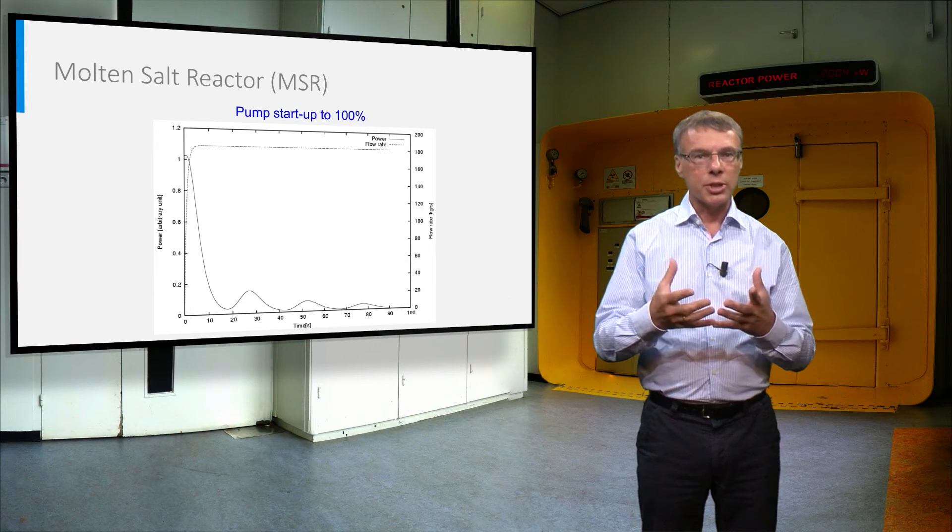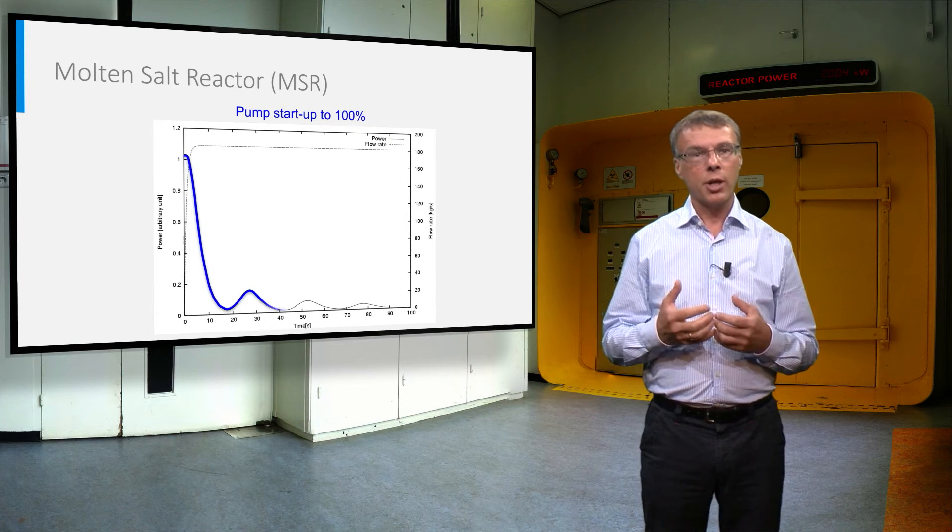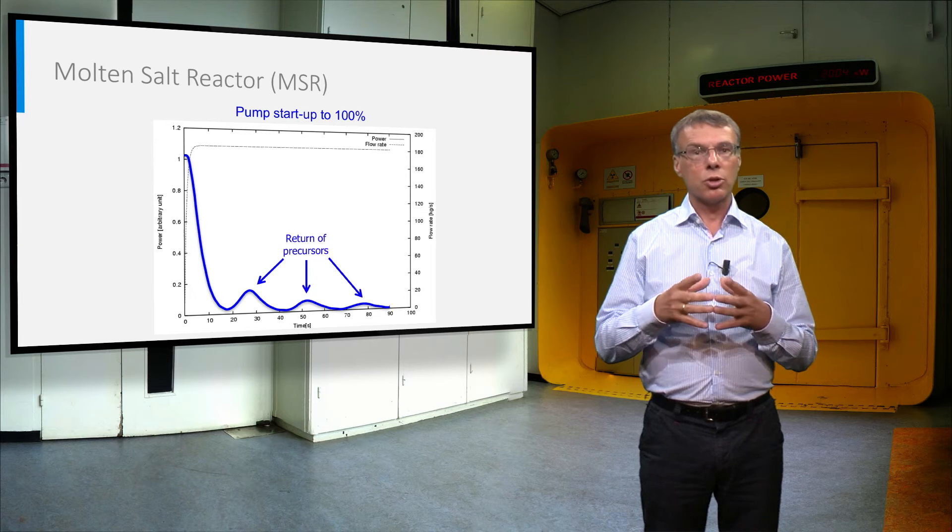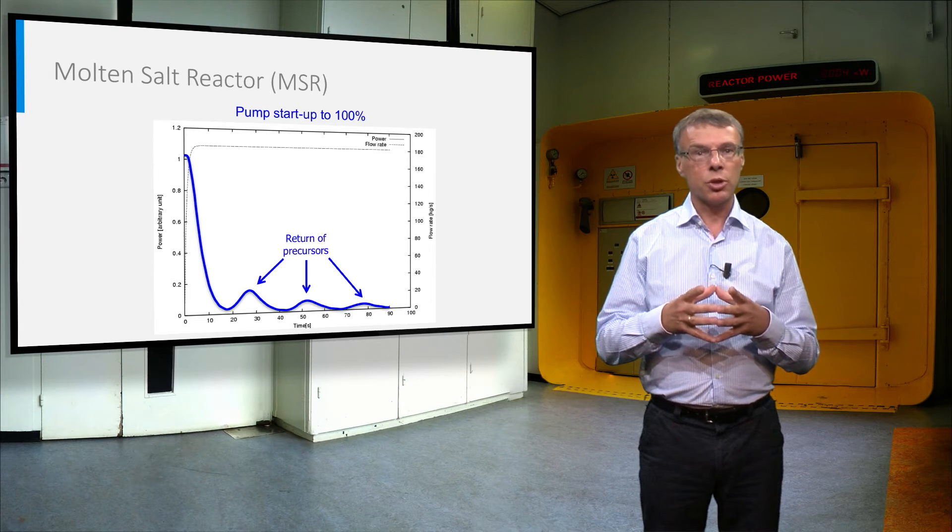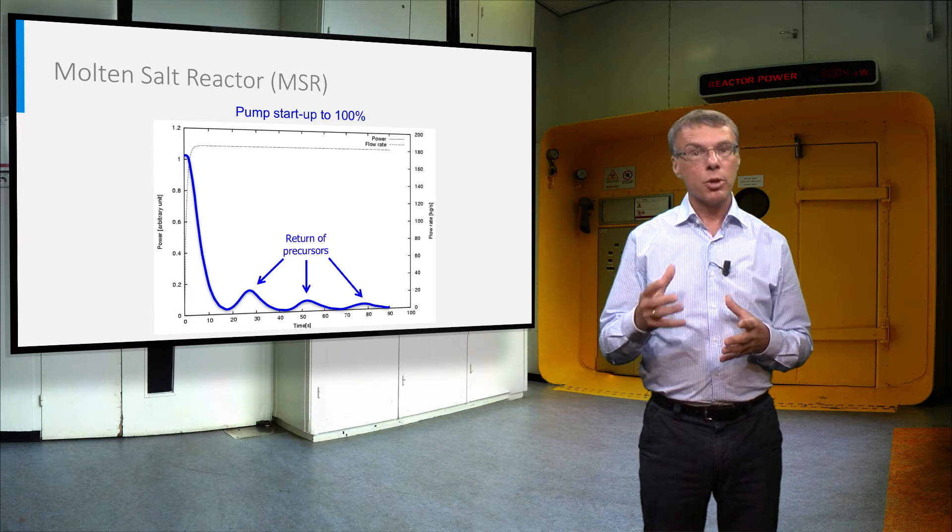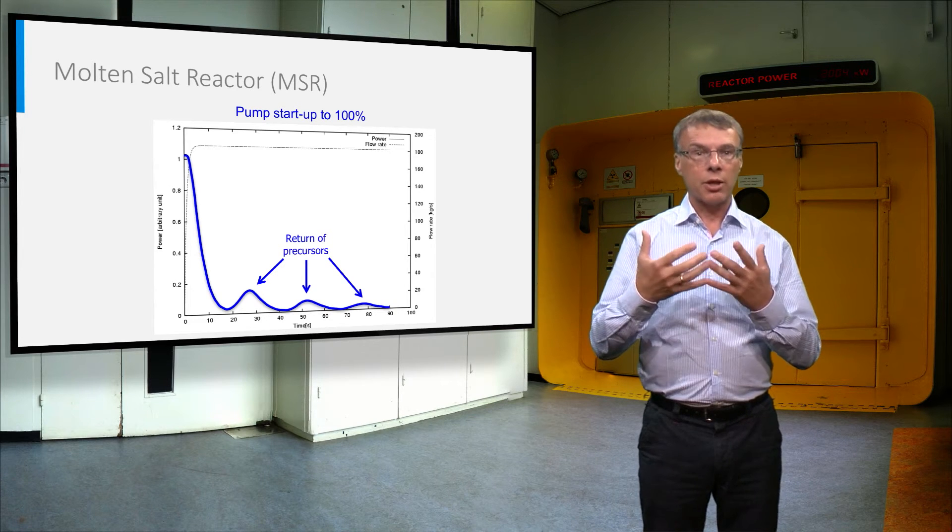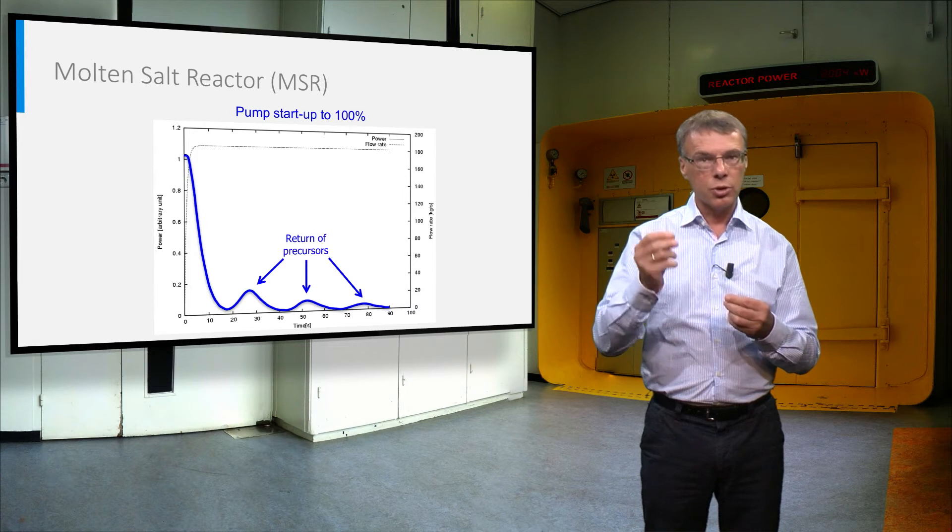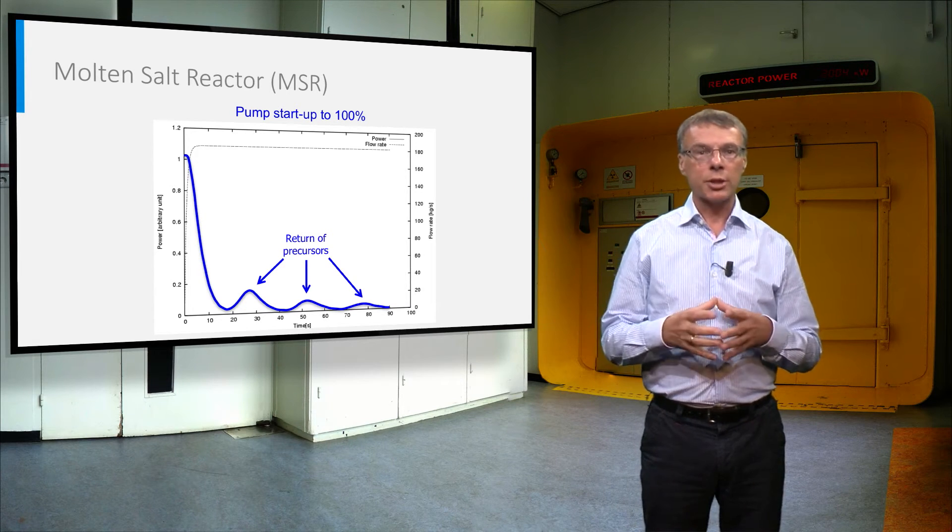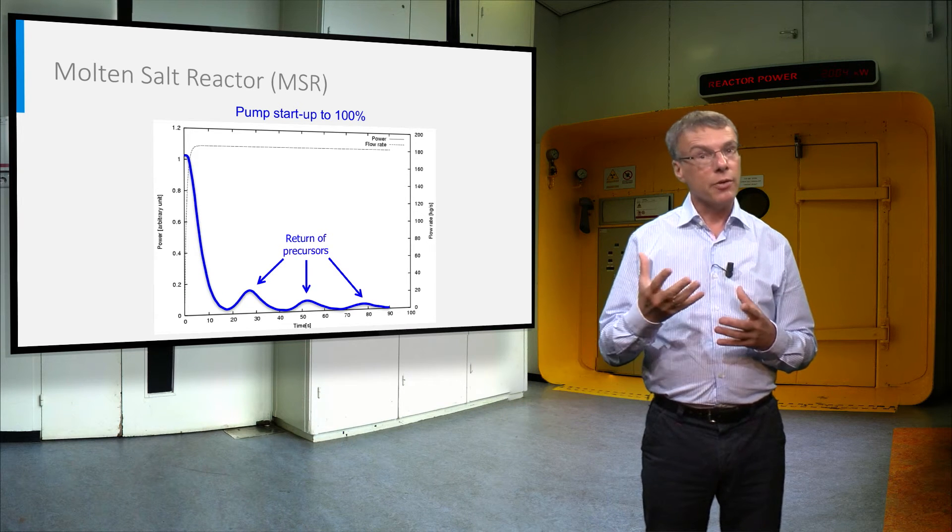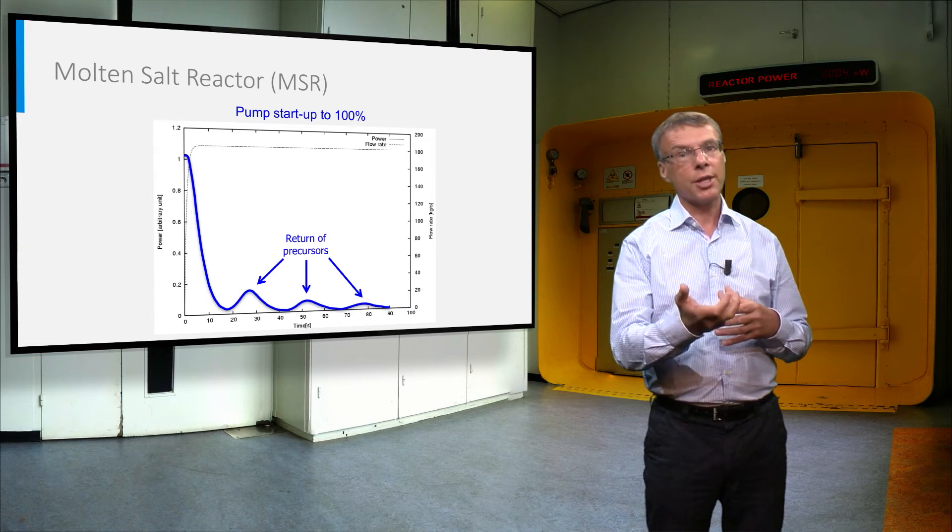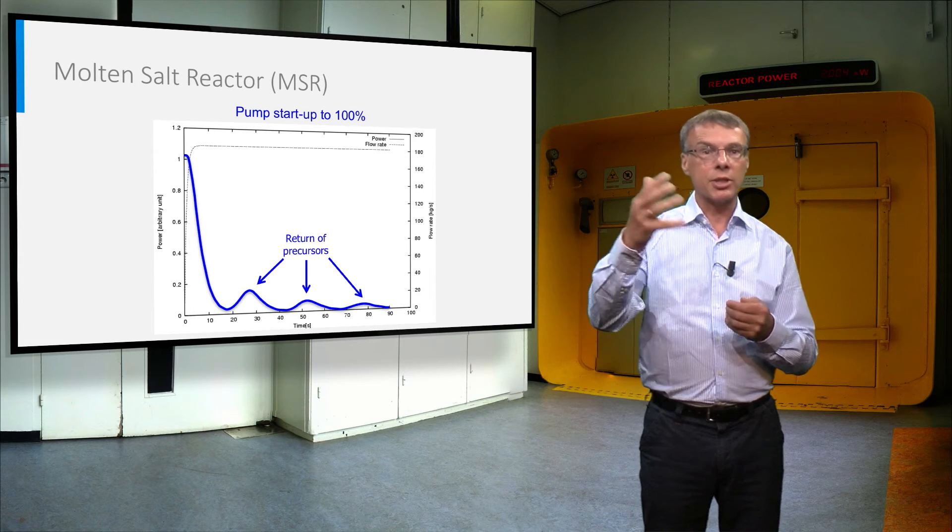Surprisingly, also the opposite, an increase of pump power leads to a decrease of reactor power. This plot shows the reactor power of a critical molten salt reactor when the pumps are turned on. Because the precursors, these are the fission products that release a neutron after beta decay, are expelled from the reactor core, the reactor power decreases sharply. If after some tens of seconds the remaining precursors return to the reactor core, the reactor power increases again.